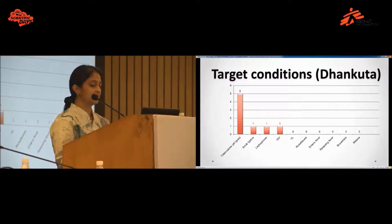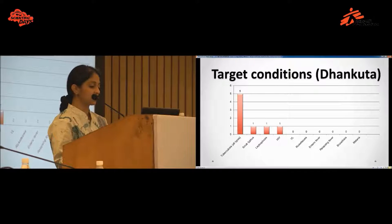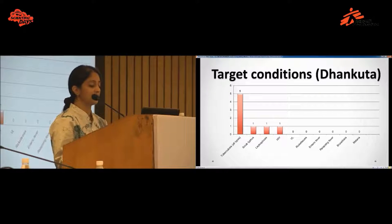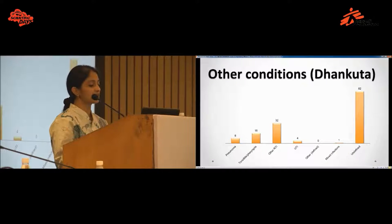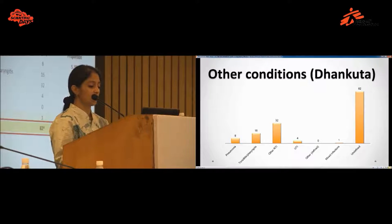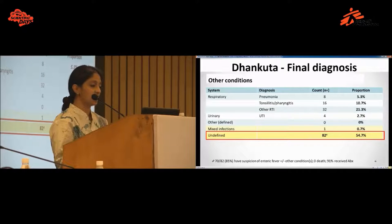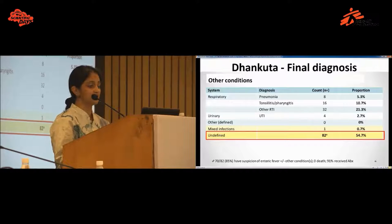In Dhankuta, which is in a different topographical region, the results were different. The main diagnoses were tuberculosis, scrub typhus, and leptospirosis. There was no visceral leishmaniasis, malaria, or brucellosis — in contrast to BPKIHS where we had seen many cases of visceral leishmaniasis. In Dhankuta, around 54% of cases were also undefined. Of those, 85% were suspected of enteric fever and 91% had received antibiotics.